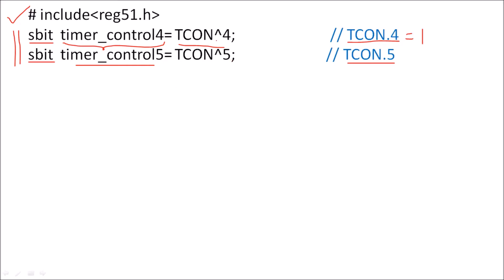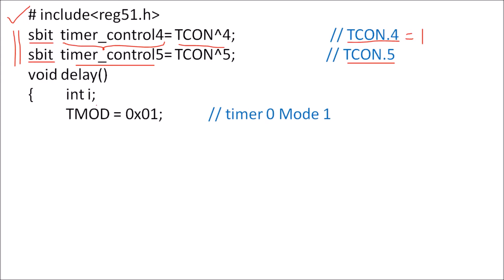These are global declarations written after including the header file. From here onward, timer_control_4 refers to TCON.4 and timer_control_5 refers to TCON.5. We write other functions first and then the main function last. In the delay function for Timer 0 Mode 1, we first initialize the TMOD register with 0x01.